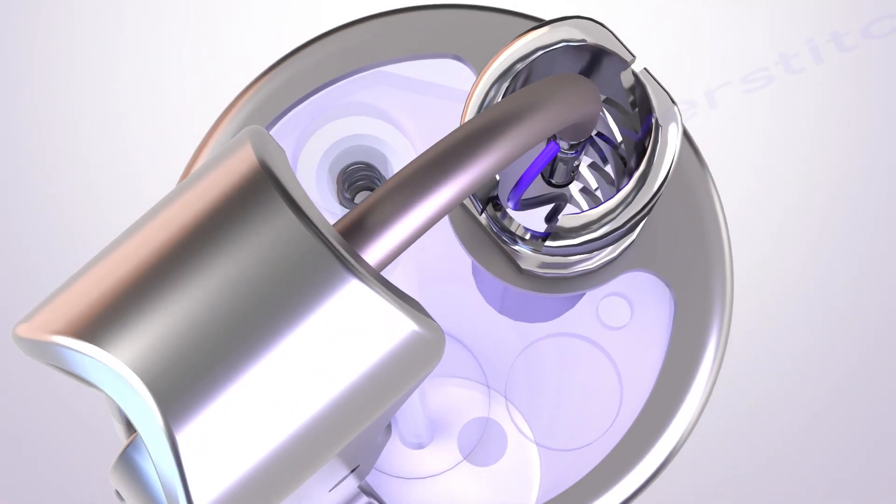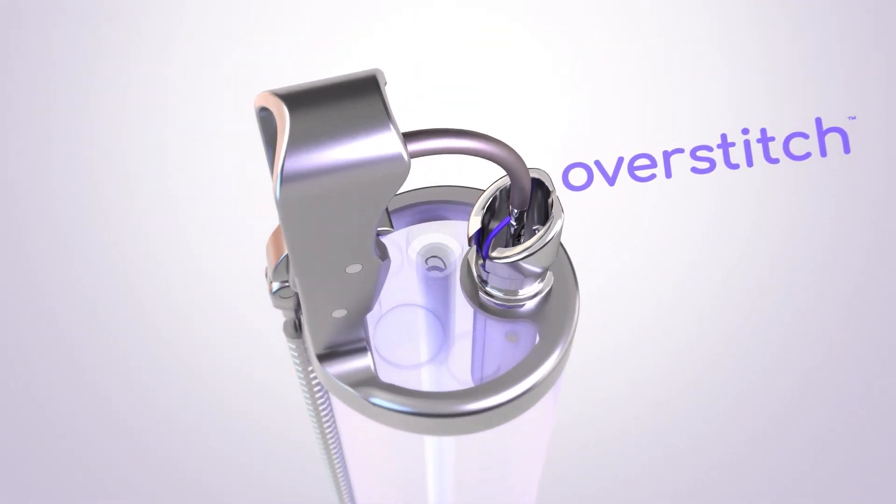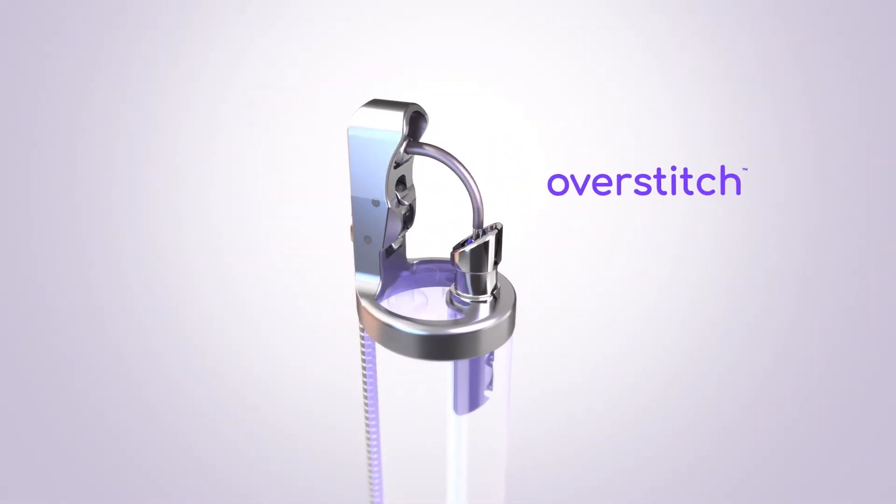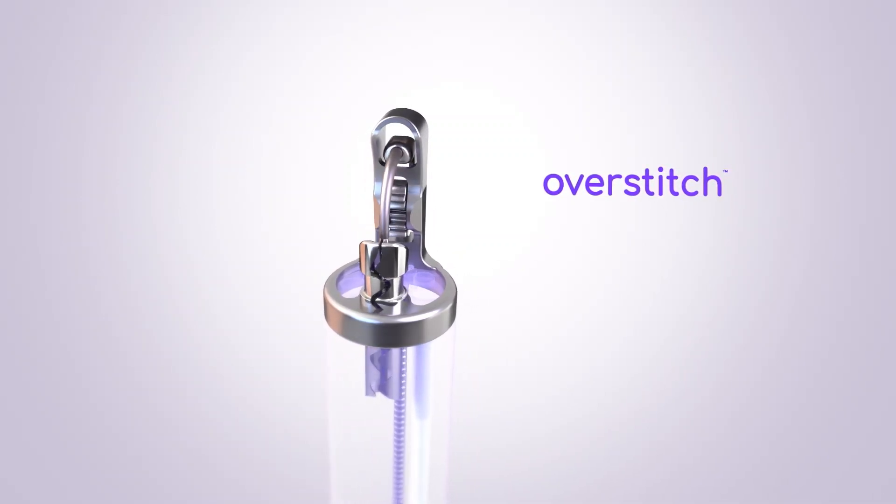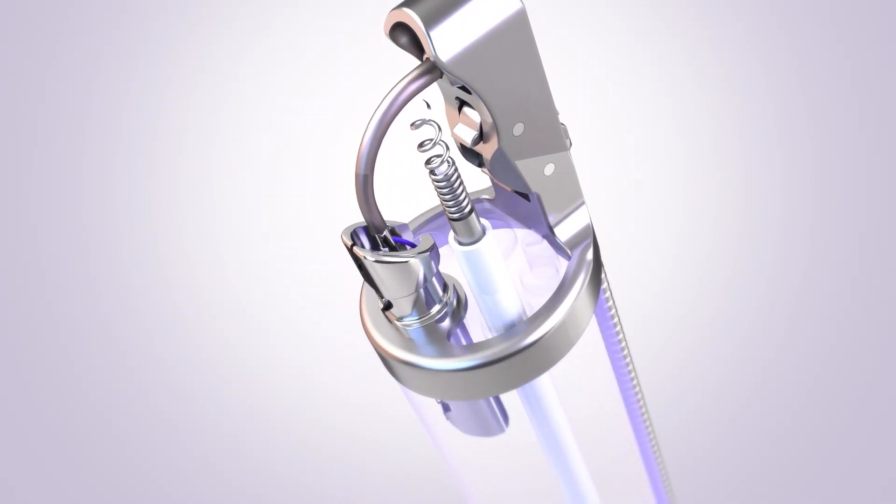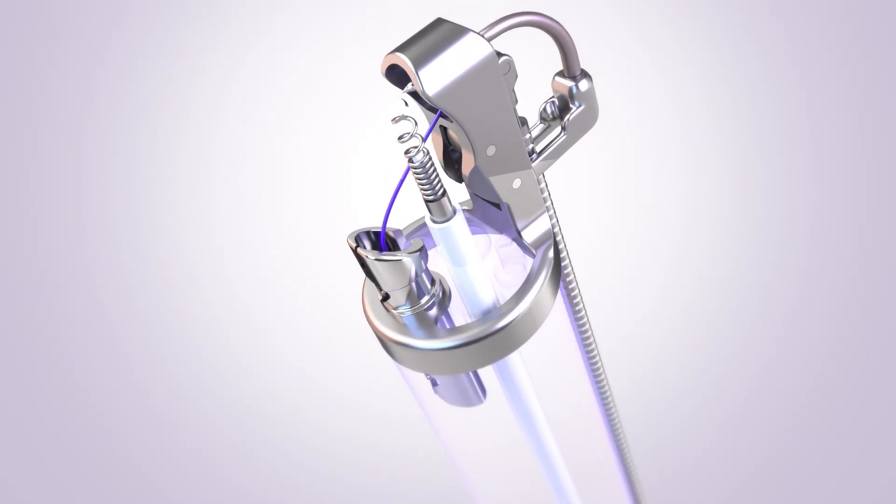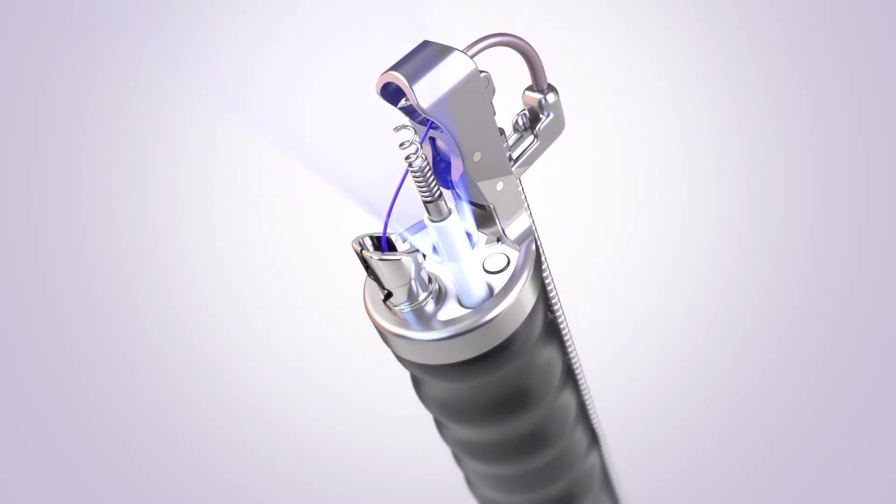ESG is performed using the Apollo Overstitch System, the device CE marked for this procedure. The Overstitch System is a small endoscopic suturing device about the size of your finger that attaches to the end of an endoscope or camera.